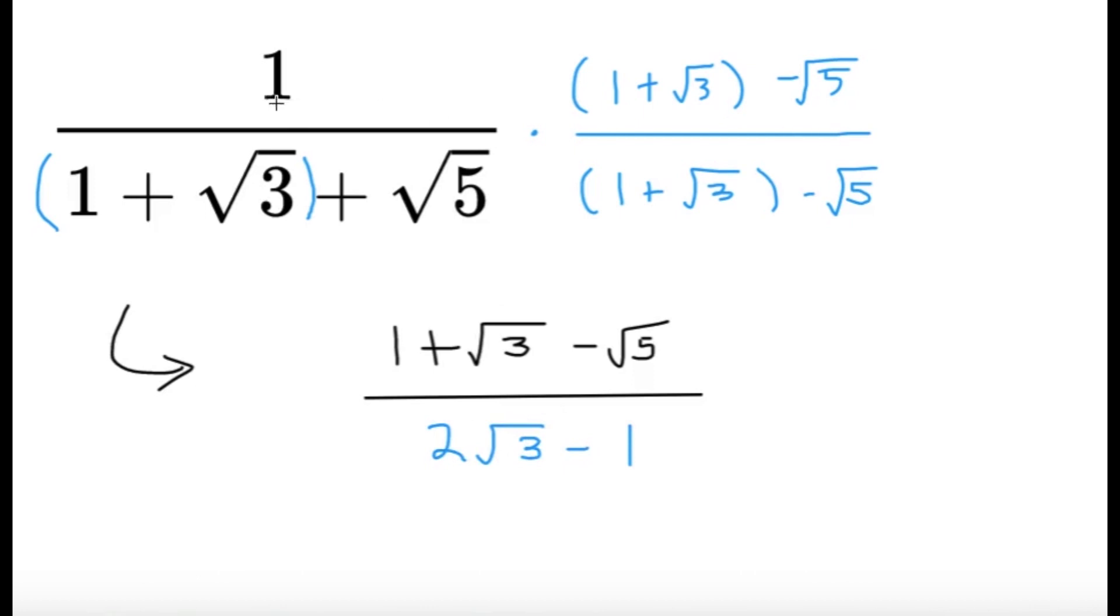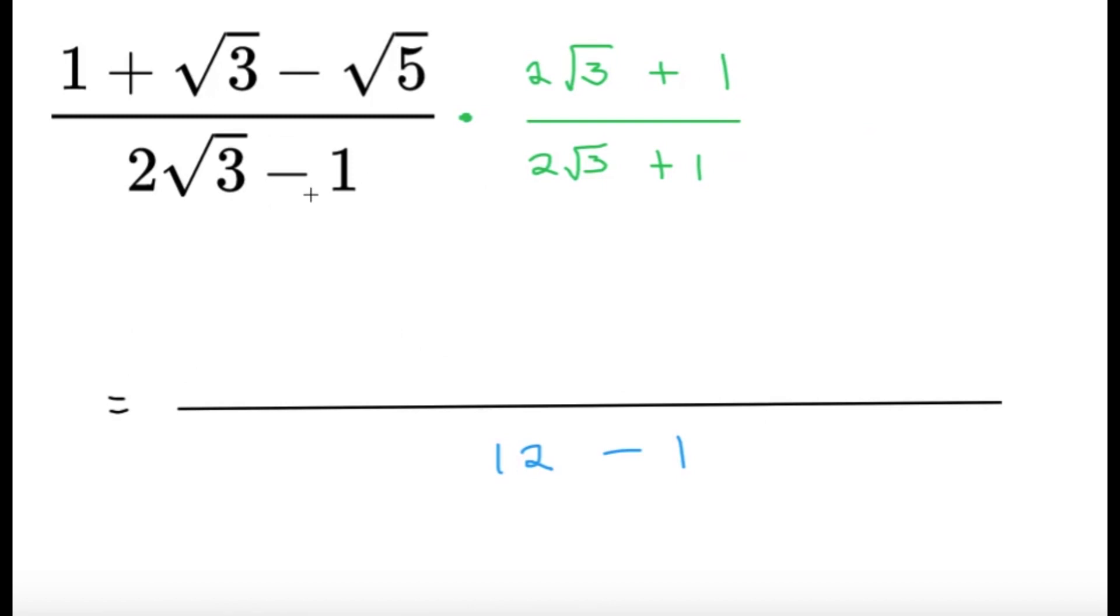Now we're not done since it's not simplified. We're going to do one more rationalization. Now this time to this expression. Now this is a simpler case now. So we multiply 2 square root of 3 plus 1, the conjugate of 2 square root of 3 minus 1, to both the numerator and the denominator. The denominator is more simple than the numerator. So for the denominator, it just becomes 2 square root of 3 quantity squared, which is just 12, minus 1 squared, which is just 1. So 12 minus 1, the denominator is actually just 11.